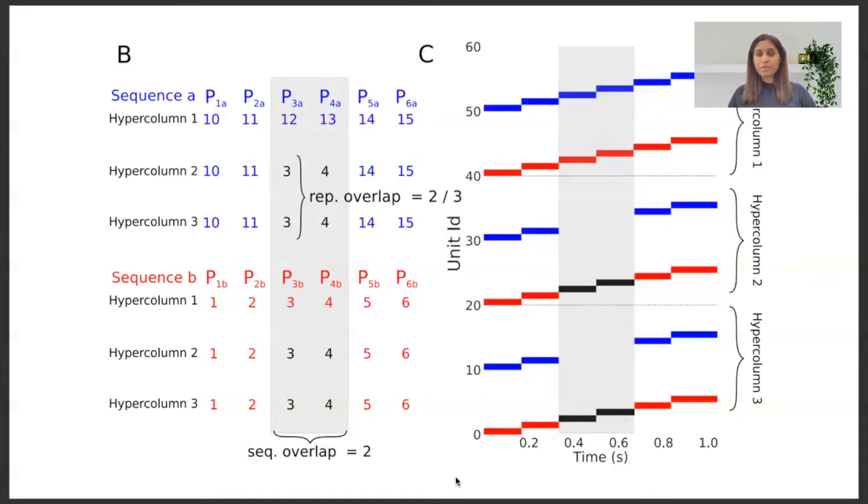This is another example. This consists of six patterns, that is six different sequences, with their patterns dispersed throughout three different hypercolumns. The two sequences share two pairs of patterns which we can see here as P3a, P3b, P4a and P4b, which is visible in this image. So we have a sequential overlap of two as seen by the gray region in the figure.